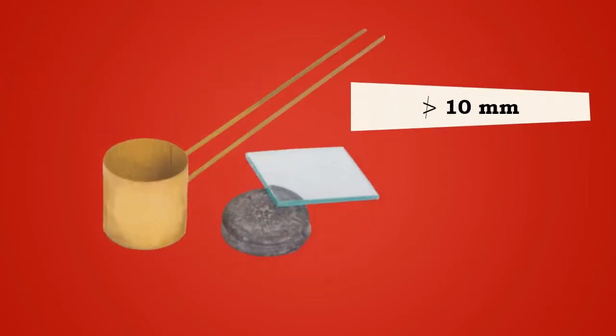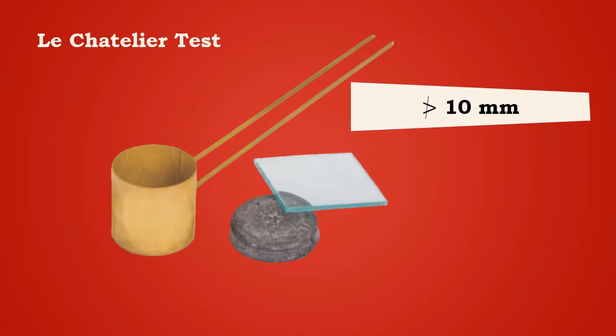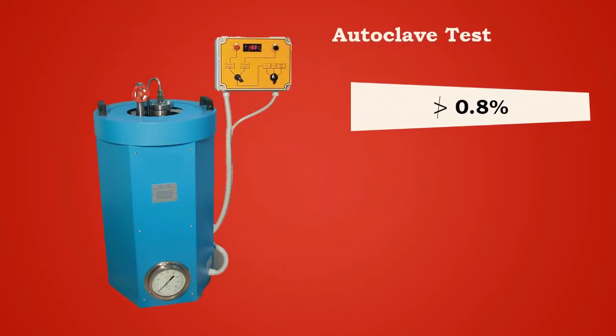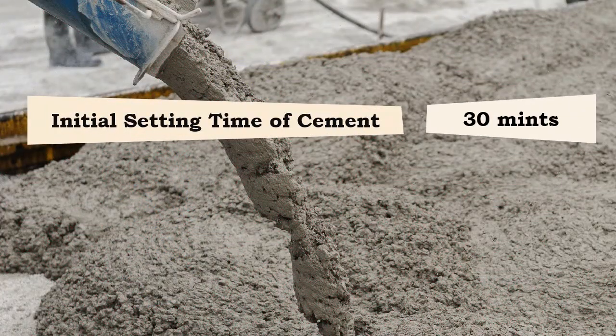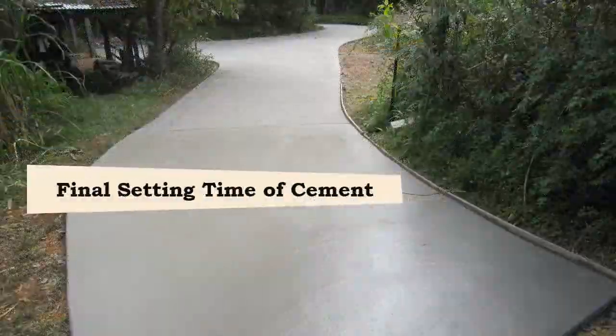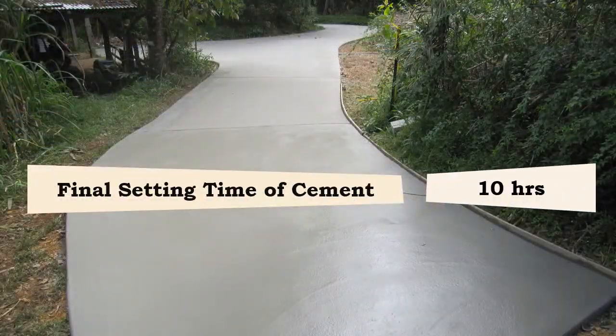The cement should not have expansion more than 10 millimeters for the Le Chatelier test and 0.8 percent for the autoclave test. The initial setting time of the cement is 30 minutes and the final setting time is 10 hours.